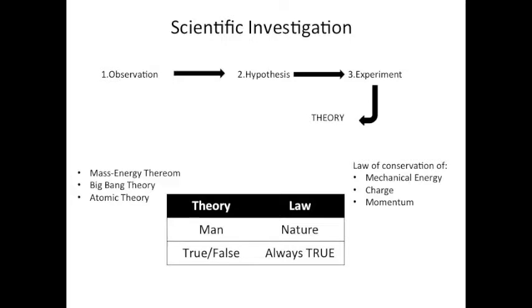Now what's the difference between a theory and a law? A law is something made by nature and it is always true, like the law of conservation of mechanical energy or charge, momentum. These are never broken. But theory is made by man. It can be true or false. Like the mass energy theorem, E is equal to mc squared. Although many experiments have proven it, well, we can't really say proven it, but support it, it still is kind of on shaky ground. Next, the big bang theory, the universe started with an explosion. This too cannot really be explained or proven.